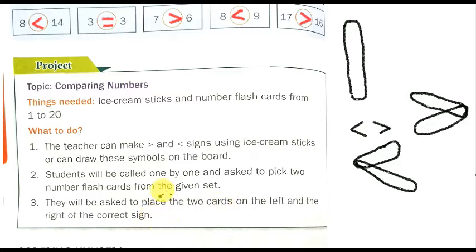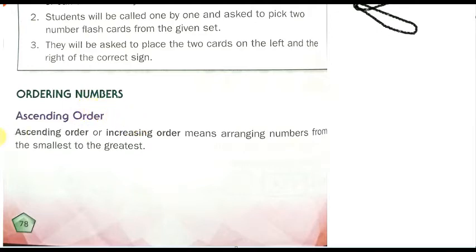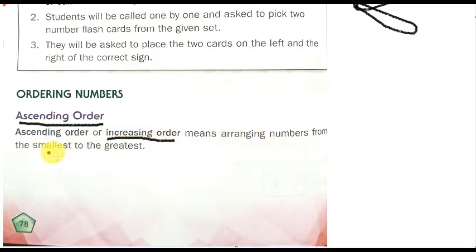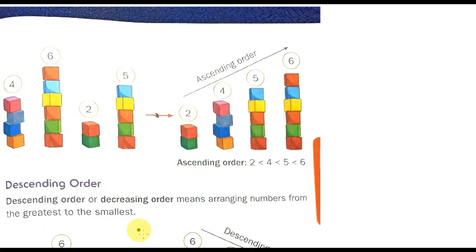Now we go to ordering numbers. There is ascending order and descending order. Ascending order is also called increasing order. Ascending order means arranging numbers from the smallest to the largest. Smallest to largest is called ascending order.